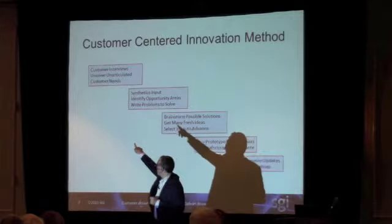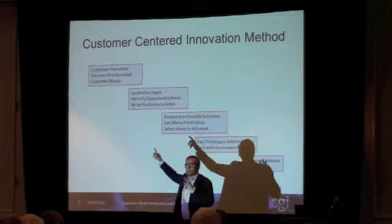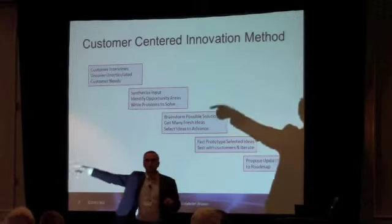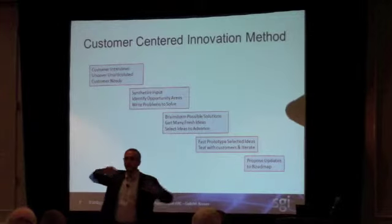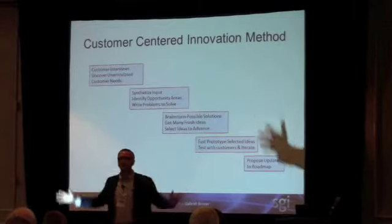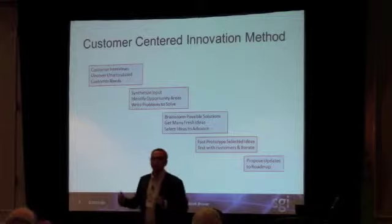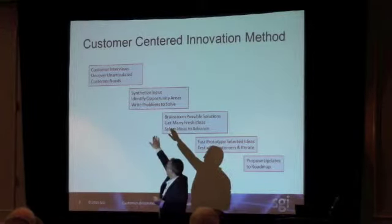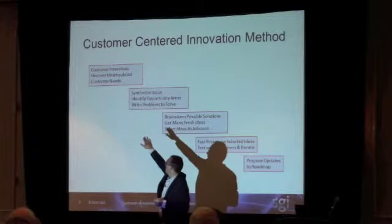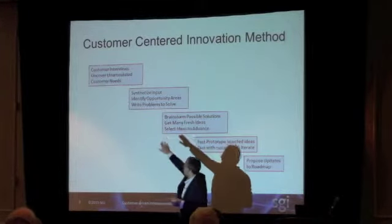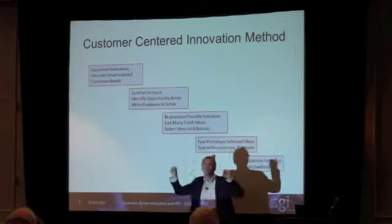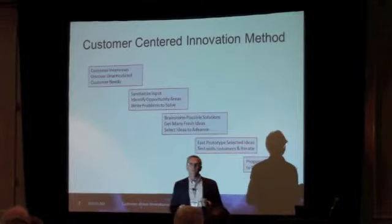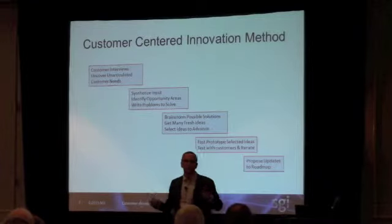So you want to uncover these unarticulated customer needs, and you want to do it in a consistent way. Because what happens at every company: a VP talks to a customer, comes back the following day and says, what we need to do is X. You don't want to take one customer input and turn it into that. So the second step is we synthesize the input from these 10 to 20 customers and identify opportunity areas — the right problems to solve. Once we have the good problem to solve, to me that's 80% of the battle.